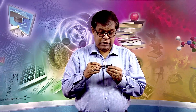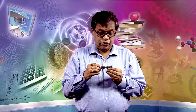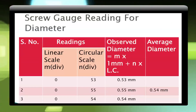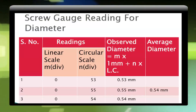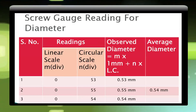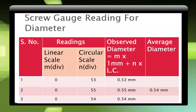I take the reading: the linear scale reading is 0, that is 0 millimeter, and the circular scale reading is 53 divisions. So 53 divisions equals 53 × 0.01, that is 0.53 millimeter. Therefore, 0 plus 0.53 gives 0.53 millimeter.